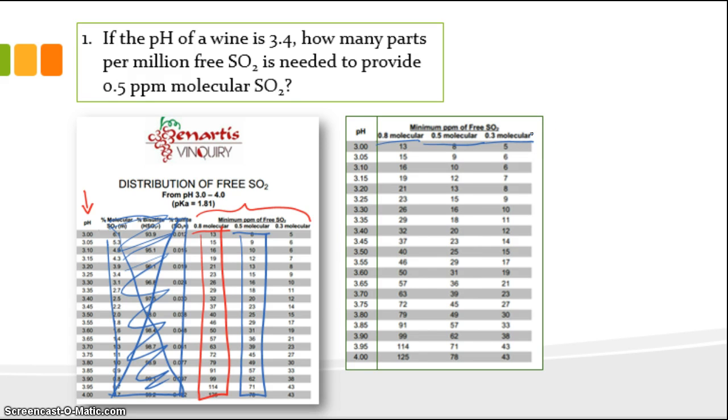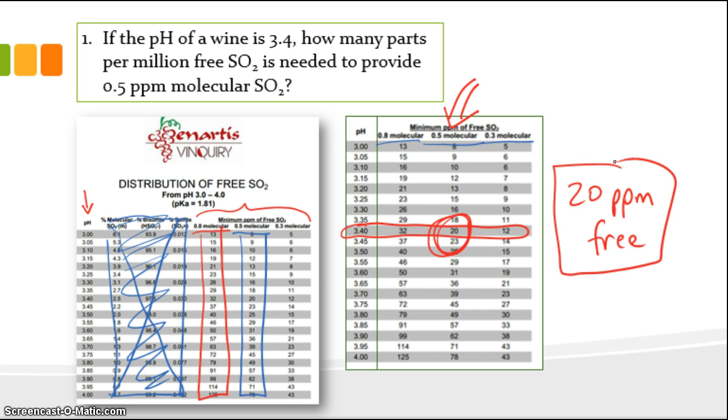So in our problem, we want 0.5 molecular. So we'd be looking at this column, column three on the revised chart. We know the pH is 3.4. So we're looking at this row here. So for 0.5 parts, to give 0.5 parts molecular at pH 3.4, the answer is we need 20 parts per million free. And that's all there is to question one. It really was just an exercise in using the chart. So if it helps you to simplify the chart and just use this four-column chart, please do so. You can ignore those three columns over here that I crossed out. Hopefully that's clear.